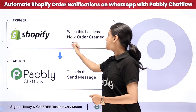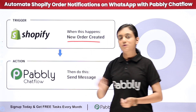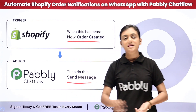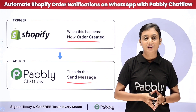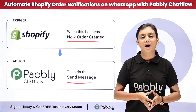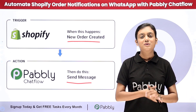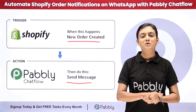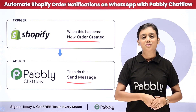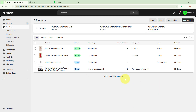Whenever an order is going to be placed in my Shopify store by the customer, automatically the customer is going to receive a WhatsApp message with the order confirmation. I manage my WhatsApp conversations with the help of Pabbly Chartflow. So if you want to learn how to create this amazing automation for yourself or your business, let me take you to my screen.